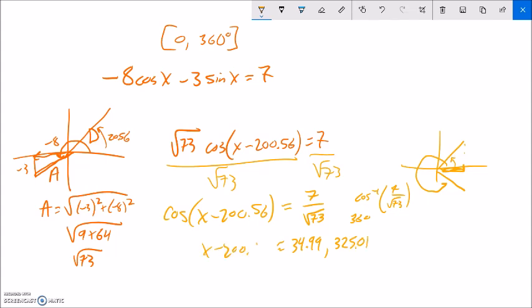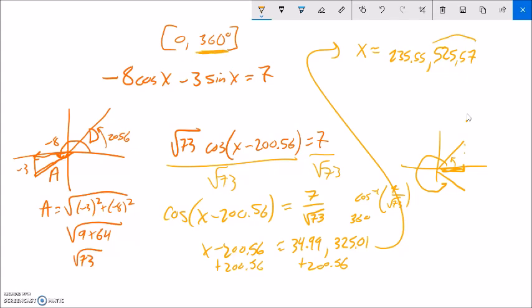So x minus 200.56 is equal to that. So now to keep solving, I can add this 200.56 to everything. So both of those are going to get that added to it. I'm going to move up here for my answer. So let's see. The 325.01 plus 200.56, it gives me about 525.57. And my other answer, 34.99 plus 200.56. It gives me 235.55, which is pretty good. But I noticed that this is outside of this range.